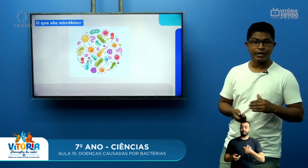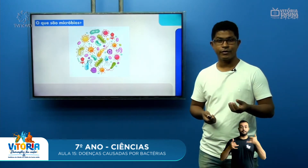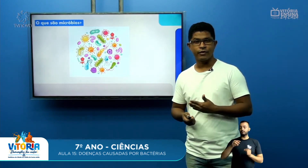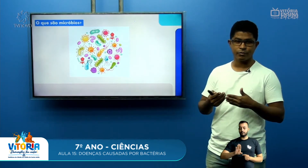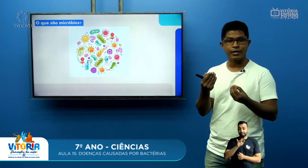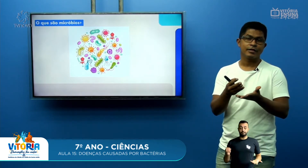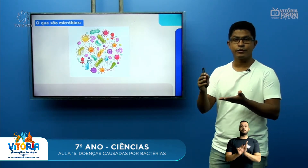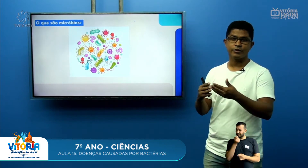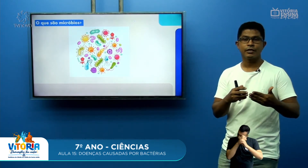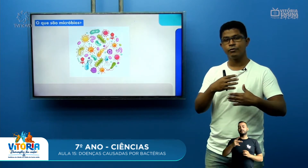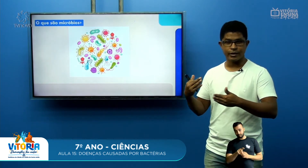Primeiramente, gostaria de relembrar o que falamos na outra aula sobre o que são micróbios. Quando falamos de micróbios, de micro e bio — pequeno e vida — esse micróbio refere-se a diversos tipos de seres microscópicos que só podem ser vistos ao microscópio e que são classificados em grupos como protozoários, vírus, fungos e bactérias.